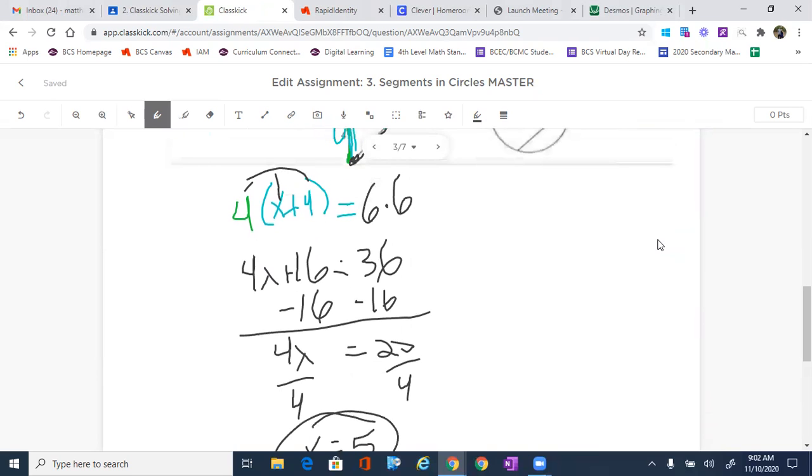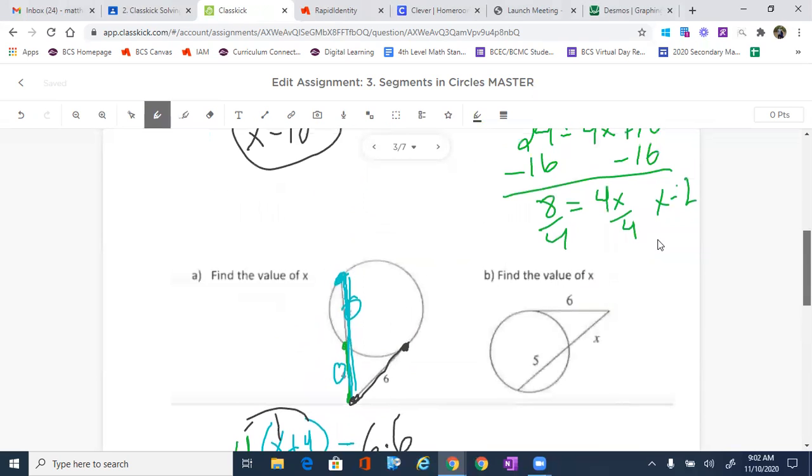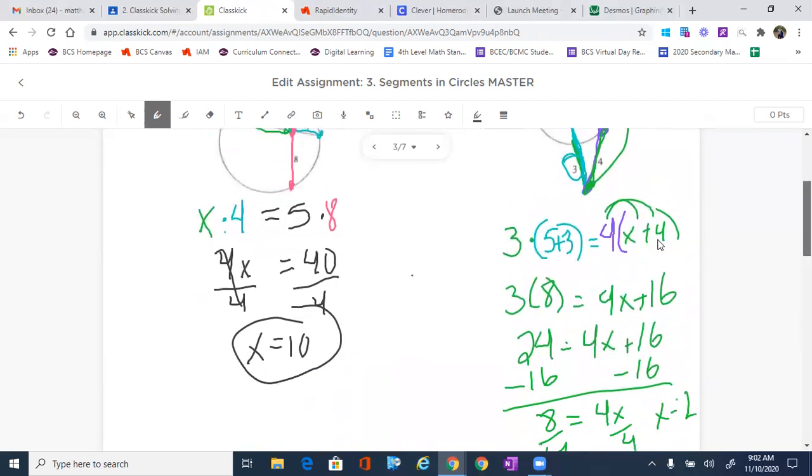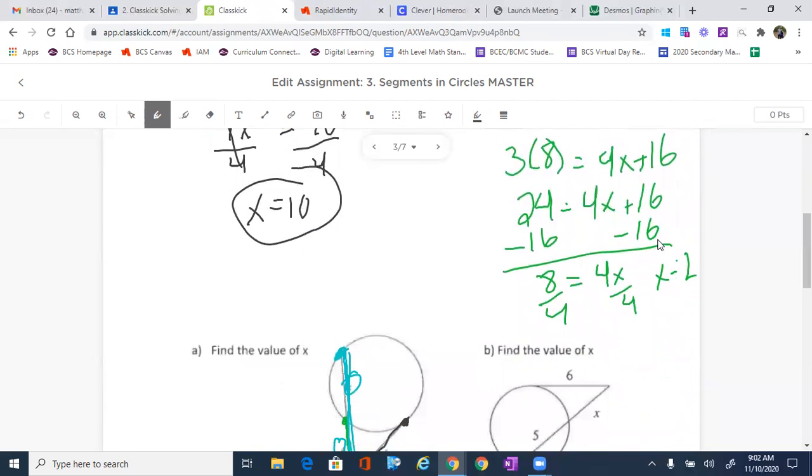Right, hope that helps you all out with these. Try to figure out that last one with the tangent, you should do pretty good with it. And those are all of our circles and segment properties when it comes to proportionality. Okay. Let's get started.